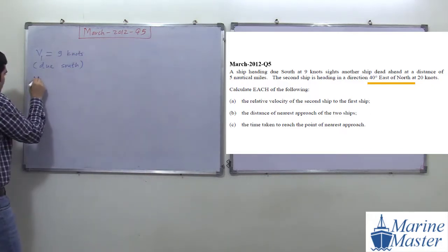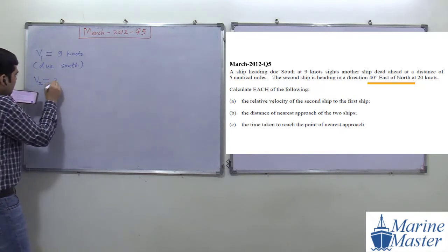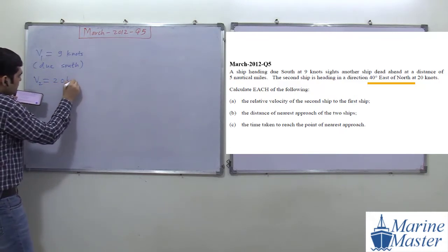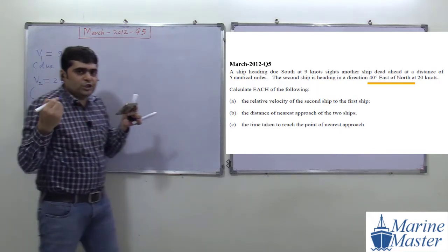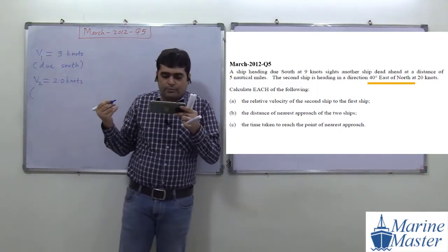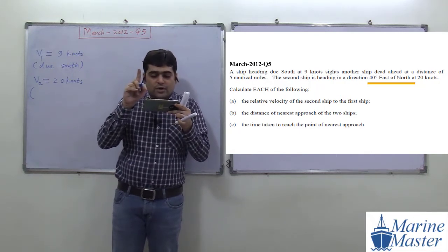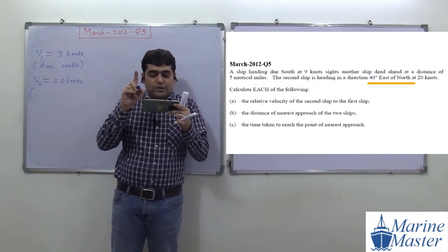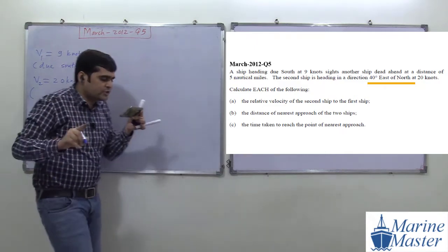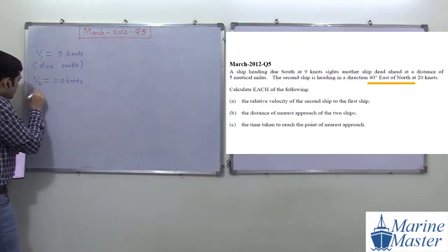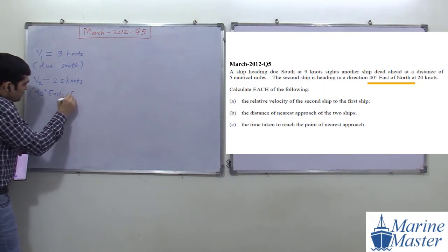The speed of the second ship V2 is twenty knots. The direction of V2 is forty degrees east of north. So V2 = 20 knots at 40° east of north.